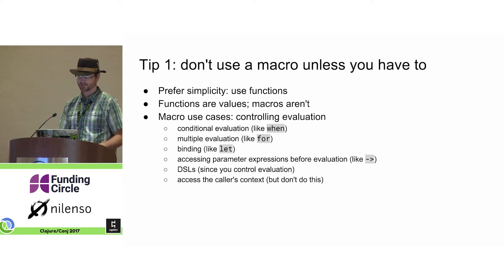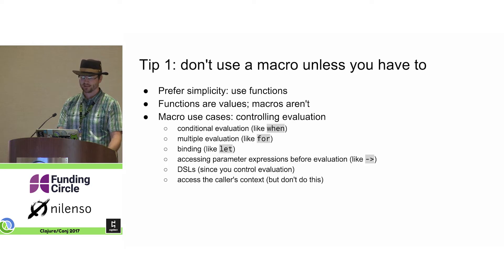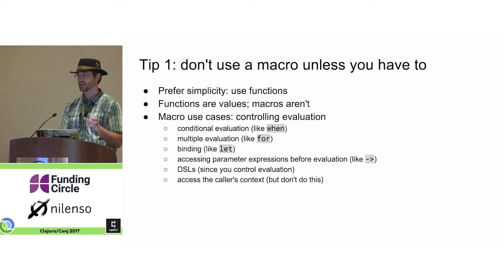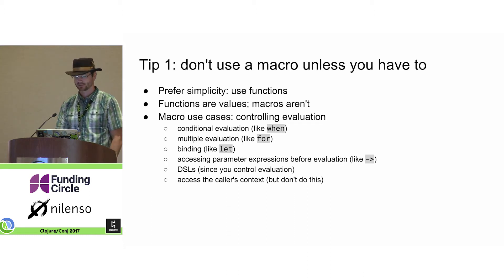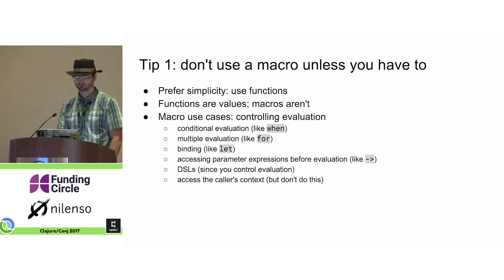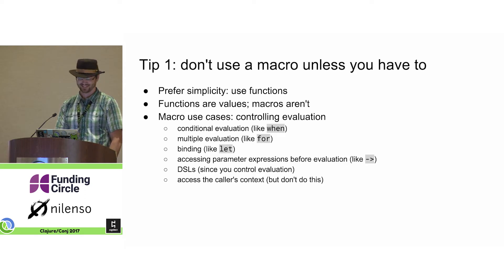Here are some common use cases for macros: conditional evaluation, such as what `when` or `if` does; multiple evaluation, such as what `for` does; binding, like `let` — notice that the names in the binding statements are not evaluated normally; accessing parameter expressions before they are evaluated, such as what the threading macro does; and DSLs, since you control evaluation. You can also access the caller's context, but don't do that — well, maybe in some cases, but don't do that.